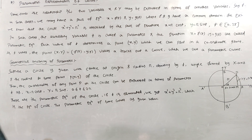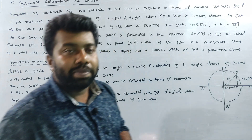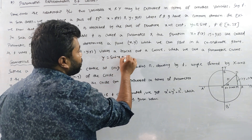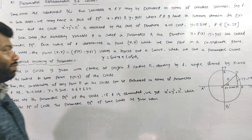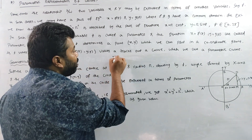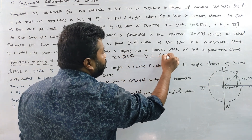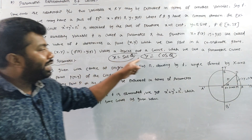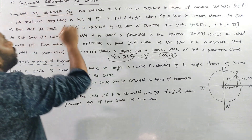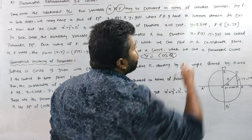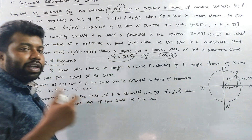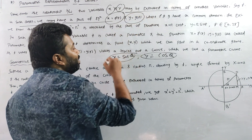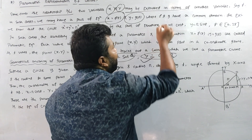Let's take a look at the parametric representation of a curve. The curve can be represented in many different forms. For example, y is equal to sin x plus cos x — this is the implicit form. In parametric form, x is equal to sin theta and y is equal to cos theta. Sometimes the relationship between two variables x and y may be expressed in terms of another variable. In such cases, we may have the pair of equations: x = f(t), y = g(t), where f and g share a common domain.